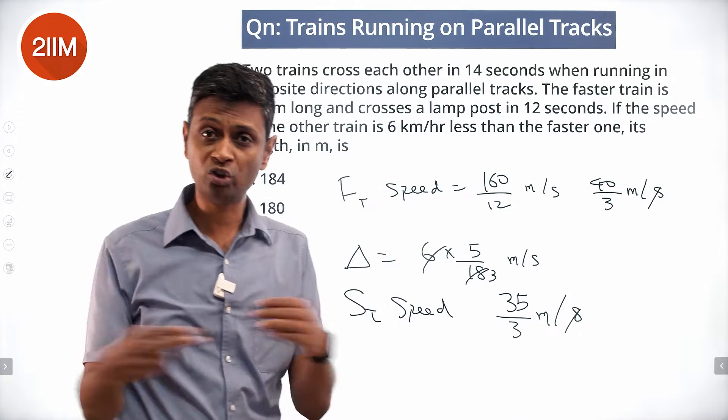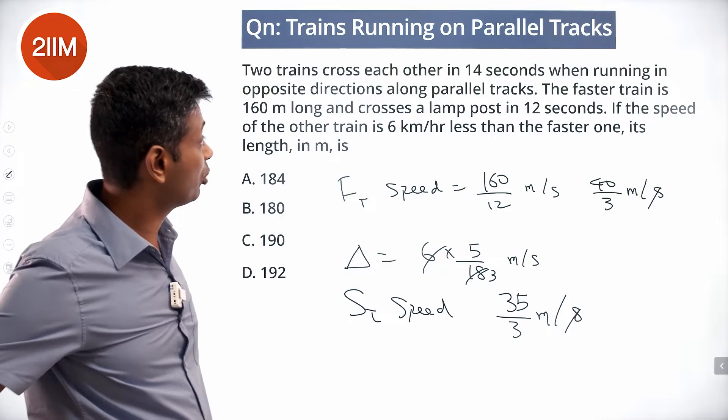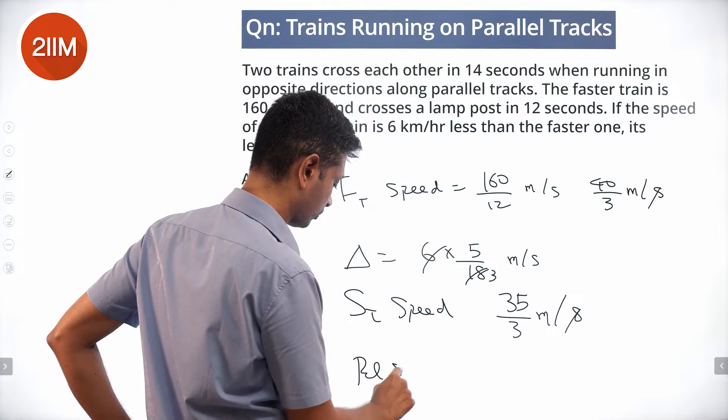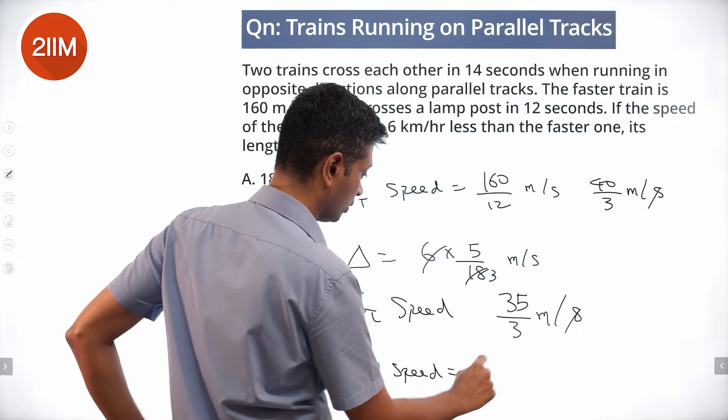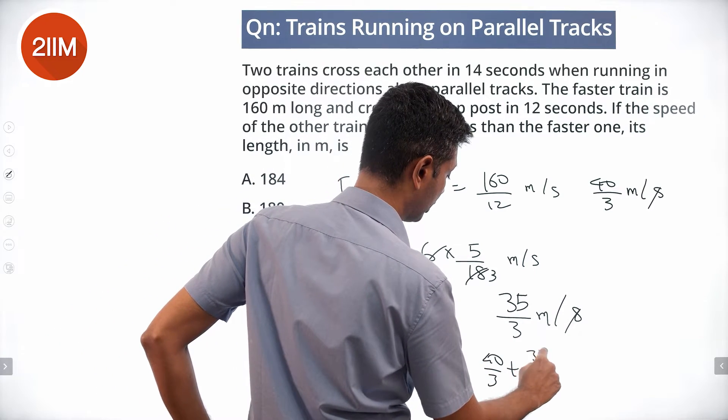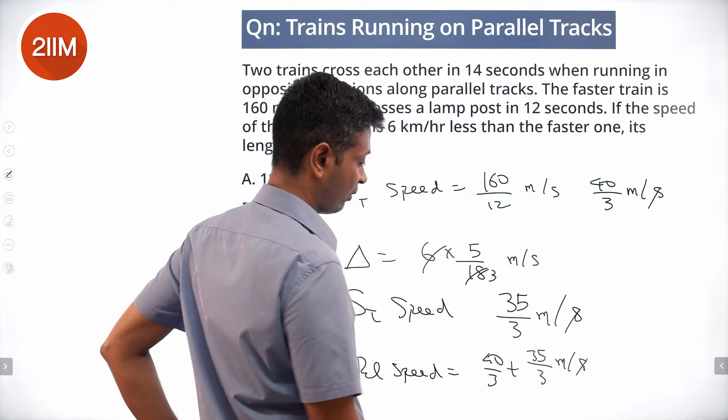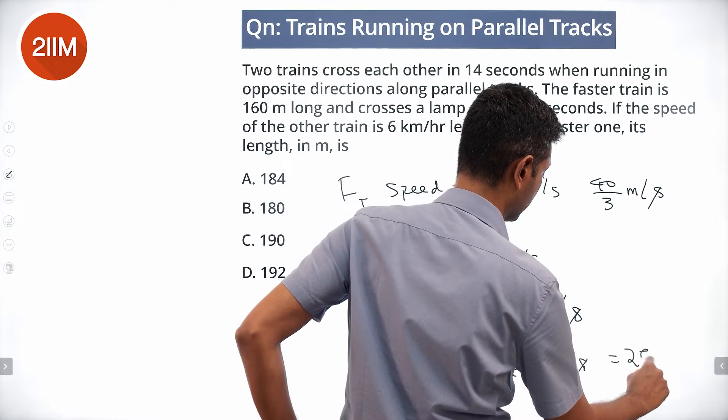The two trains cross each other when running in opposite directions on parallel tracks. So relative speed is 40 by 3 plus 35 by 3 meters per second, which equals 75 by 3 or 25 meters per second.